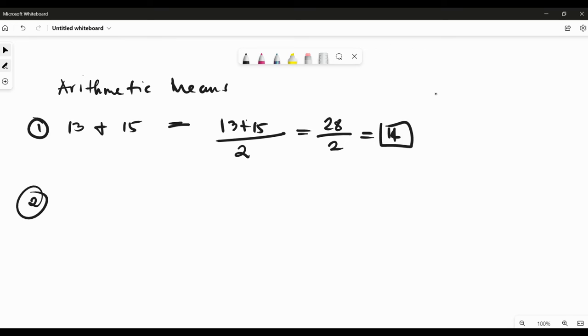Another example, let's say you have 15 and 25. So you have 15 plus 25 all over 2. And this is going to be 40 divided by 2 is 20.